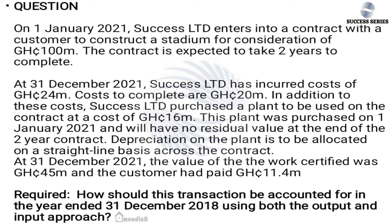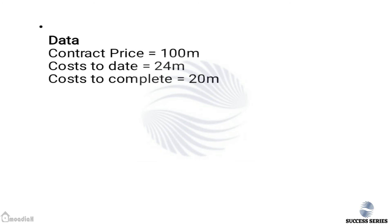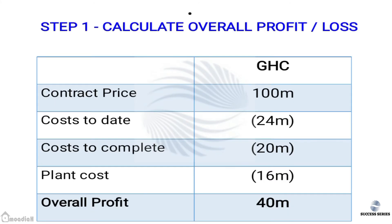At 31 December 2021, the value of work certified was 45 million Ghana cedis and the customer had paid 11.4 million Ghana cedis. Required: account for this transaction in the year ended 31 December 2021 using both the output and input methods. Collecting our data: contract price = 100 million, cost to date = 24 million, cost to complete = 20 million, plant cost = 60 million, annual depreciation = 60 million ÷ 2 = 8 million per year, work certified to date = 45 million, billings to date = 11.4 million.